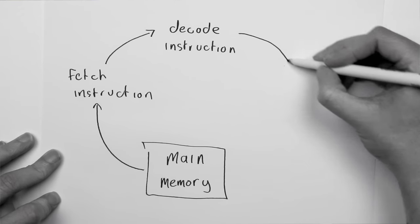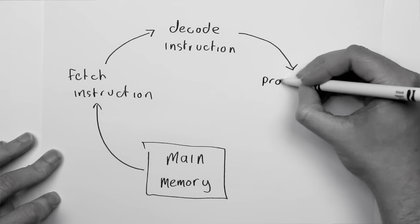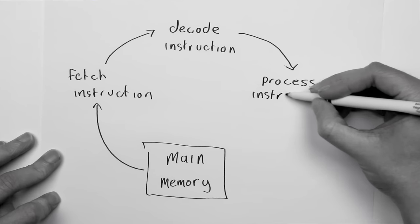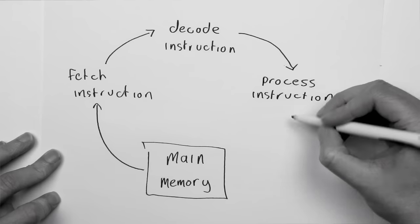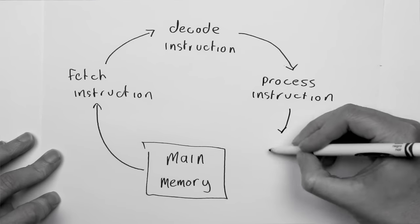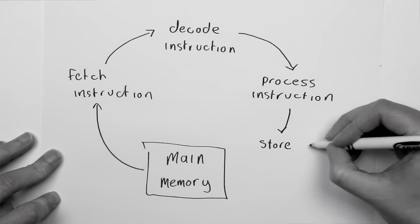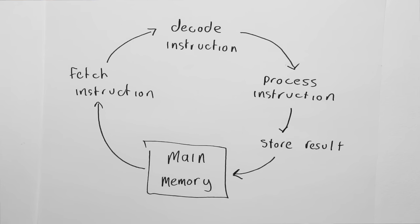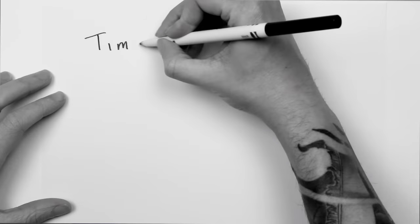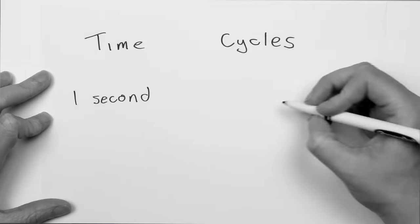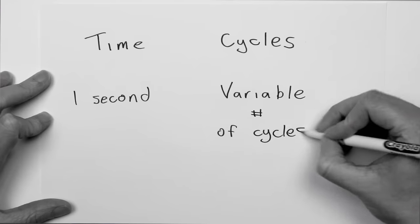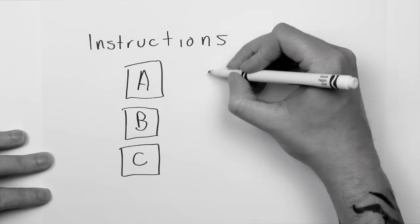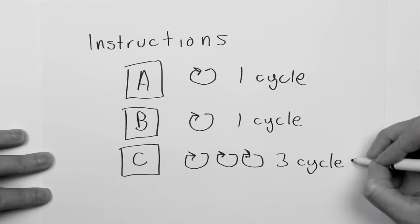Each CPU has a different instruction set. The CPU decoding step prepares various areas of the CPU to execute the instructions. The execute phase executes all of the decoded CPU instructions, stores a result in memory, and prepares the CPU for the next CPU cycle. The number of instructions executed in a cycle is variable, but the number of cycles that it takes to execute an instruction is fixed.